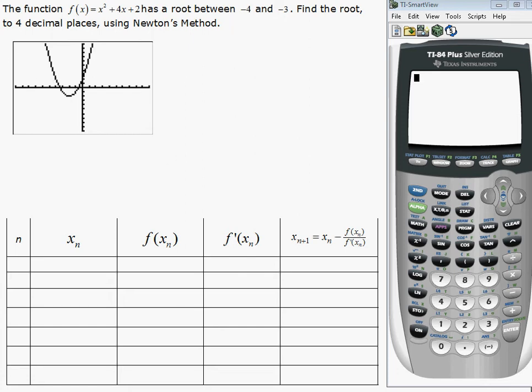In the following example, we're going to use our calculator and Newton's method to find the root of this function between negative 4 and negative 3. Here we see the graph of the function, and between negative 3 and negative 4, it crosses the x-axis. So that's the value we're looking for.